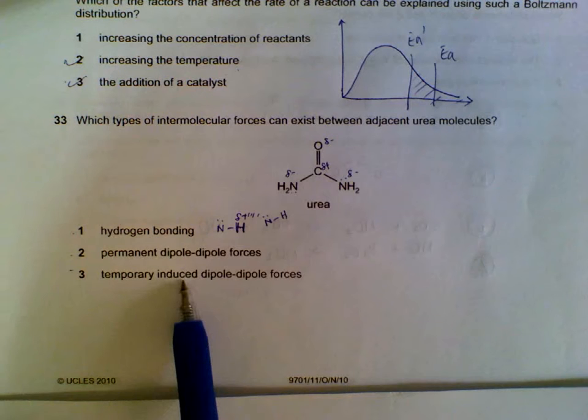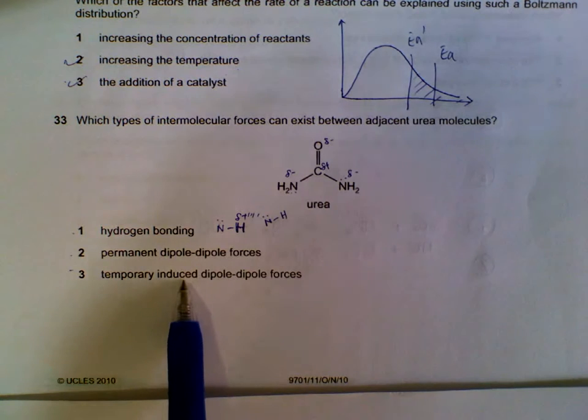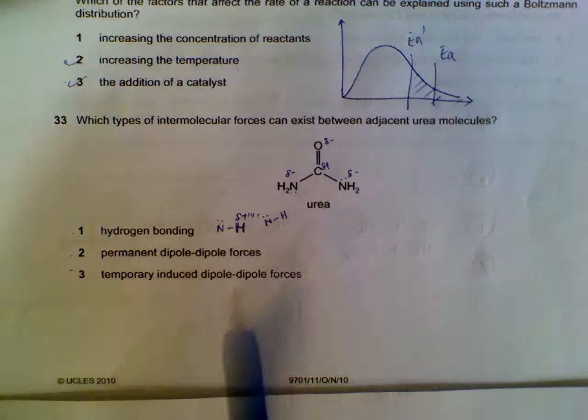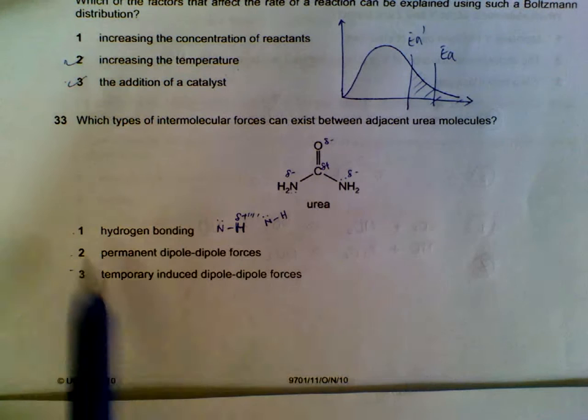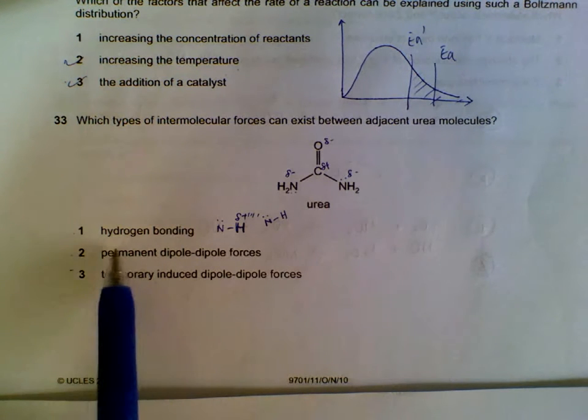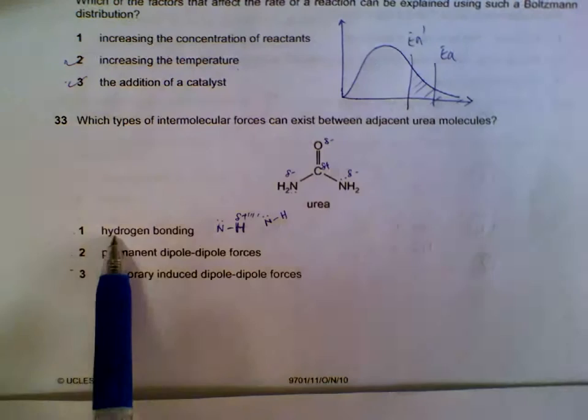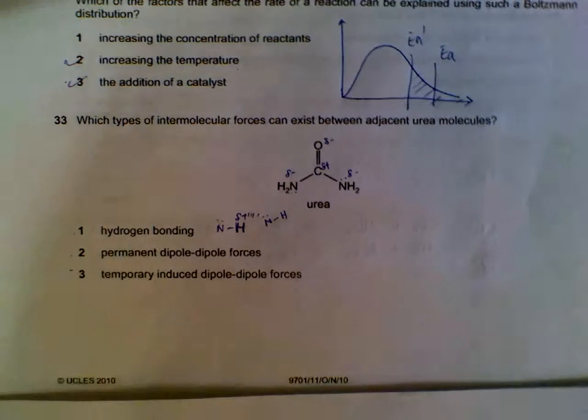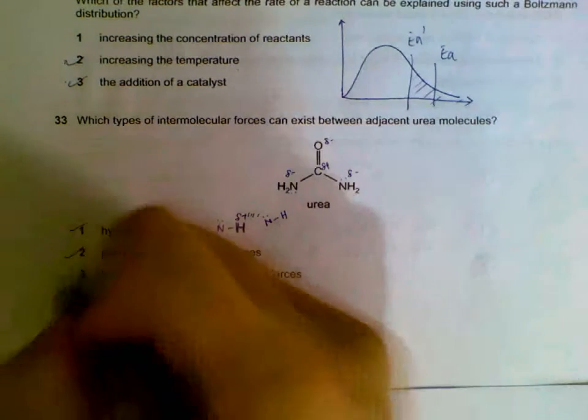And don't forget that as long as they have electrons, electron cloud, they will by default have induced dipole-induced dipole also. So it also has induced dipole-induced dipole. It's just that besides induced dipole, it has hydrogen bonding that's significant, and also permanent dipole. So all three are actually correct.